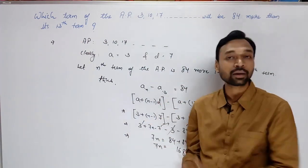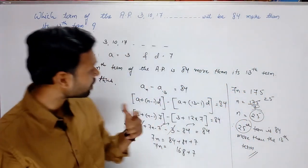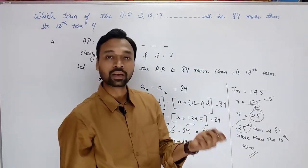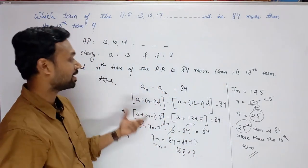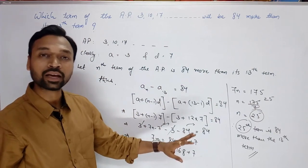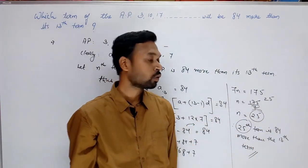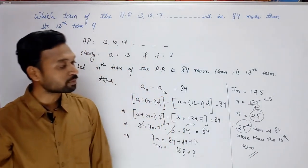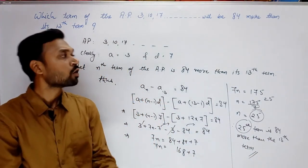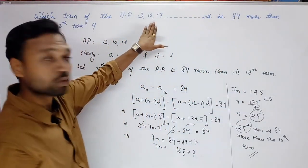Yeh alag question maine aapko karke bata diya so that aapka confidence build up ho jaaye. Humne kaha ki nth term badi hai 13th term se, 84 badi hai. Toh badi quantity minus choti quantity equals to difference diya hua — aur phir a aur d ki value substitute karke simplify karne pe n ki value aayi jo equals to 25 hai. Therefore 25th term is 84 greater than 13th term. Question mein changes aa sakte hain — 84 ki jagah kuch aur aa jaayega, AP kuch aur hogi.